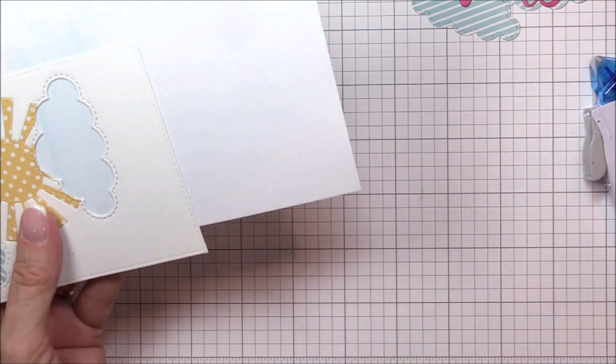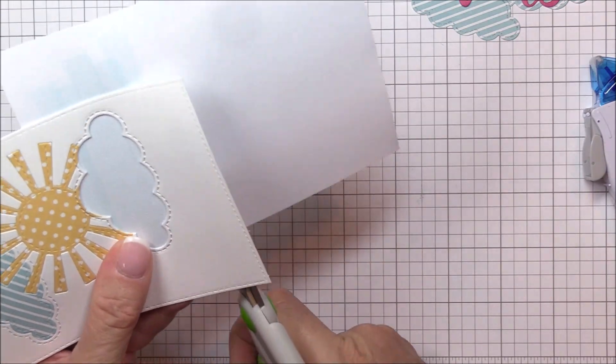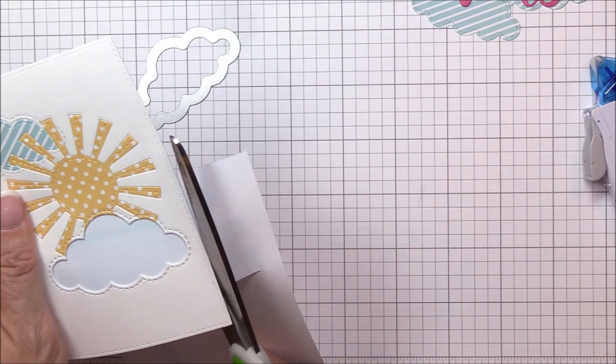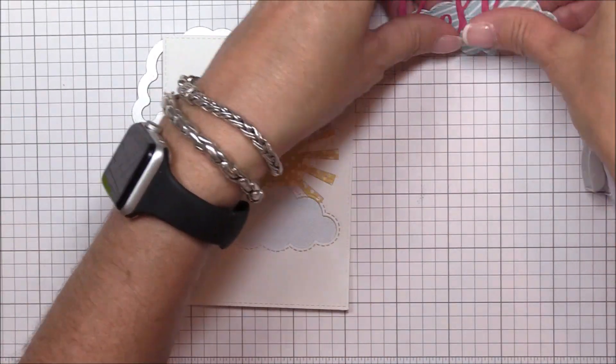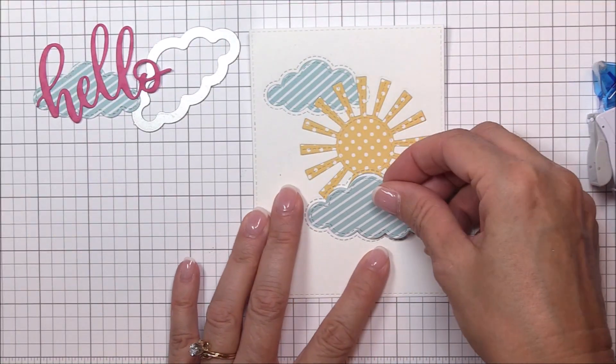I just keep die cutting in order from back to front, removing the parts that would normally be in the background and replacing them with the die cuts that should be in front of them. It's really pretty simple once you understand the logic.